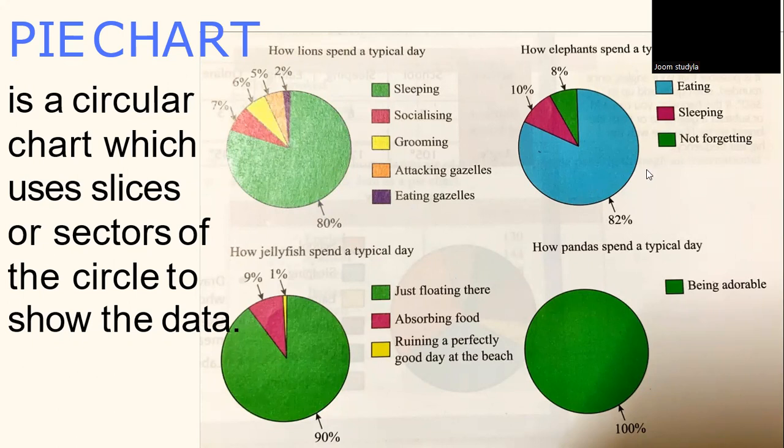And if we see the second diagram, it's actually how elephants spent a typical day. We can see elephants spent 82% on eating as compared to lions. Lions spent 80% on sleeping. And 10% on sleeping and 8% not forgetting.